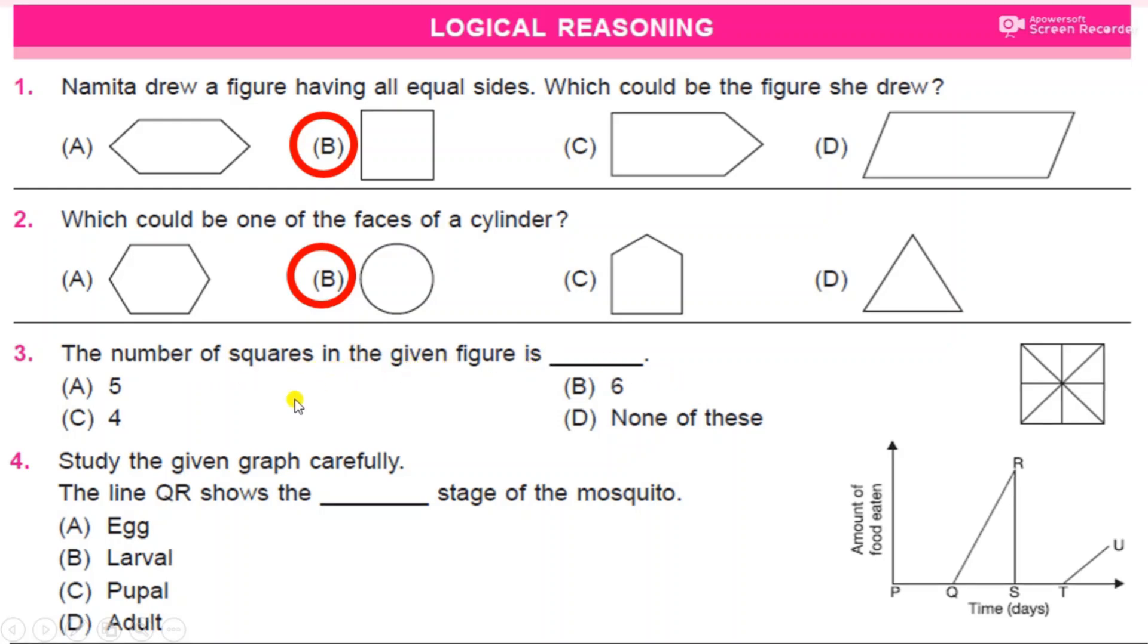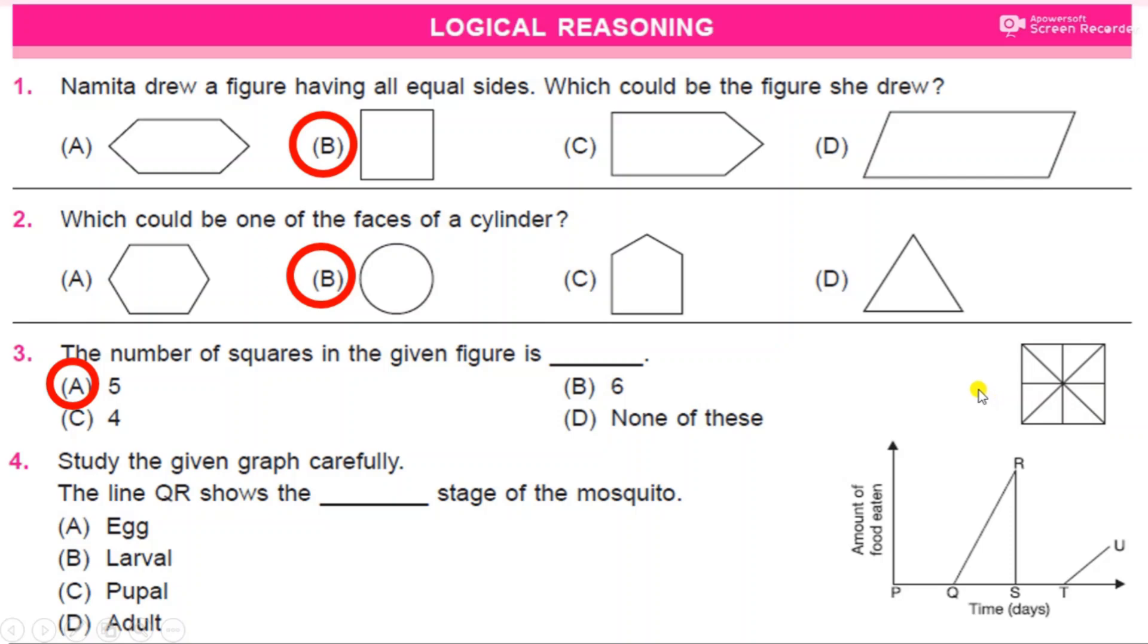The number of squares in the given figure is dash. Option A: 5, B: 6, C: 4, D: none of these. This is the figure, let us count the squares. This is one big, then this is one small, two, three, four, five. So we have total five squares in this figure.